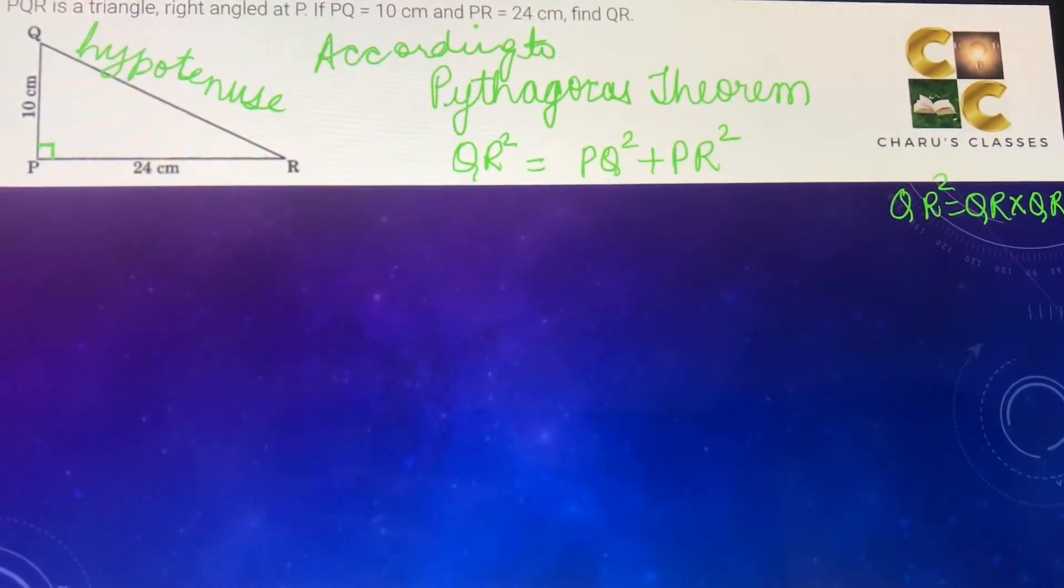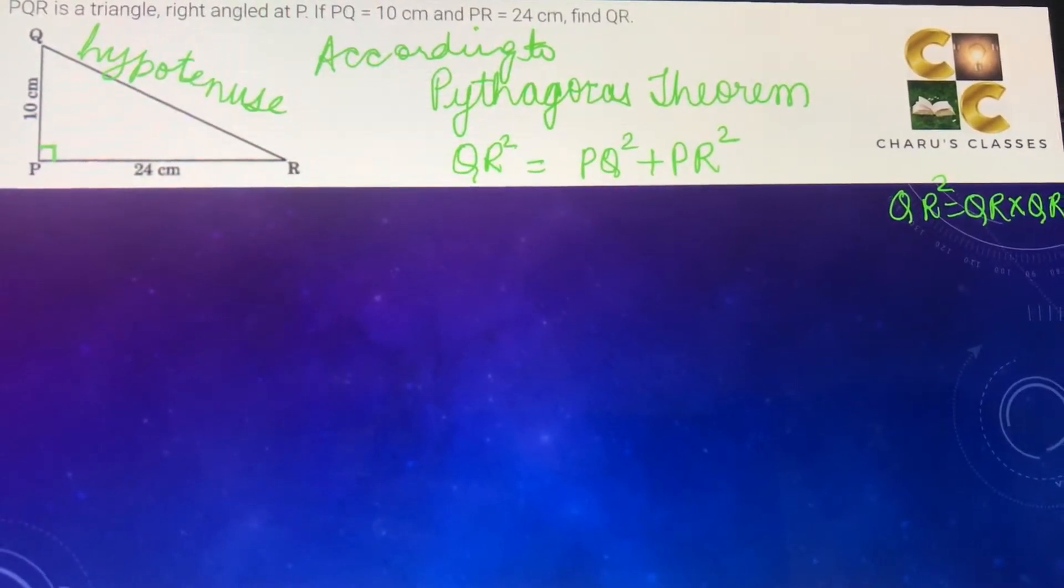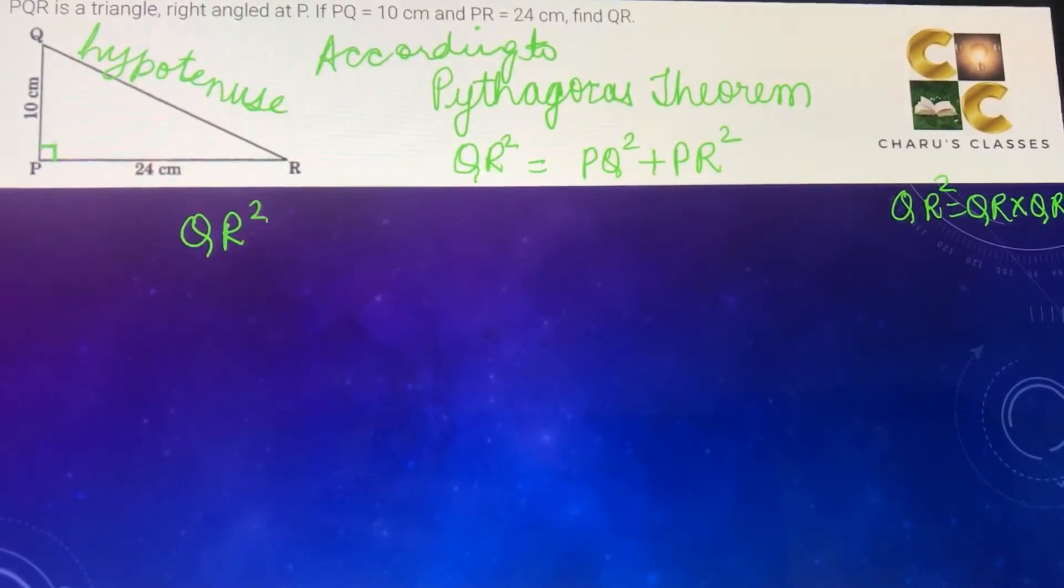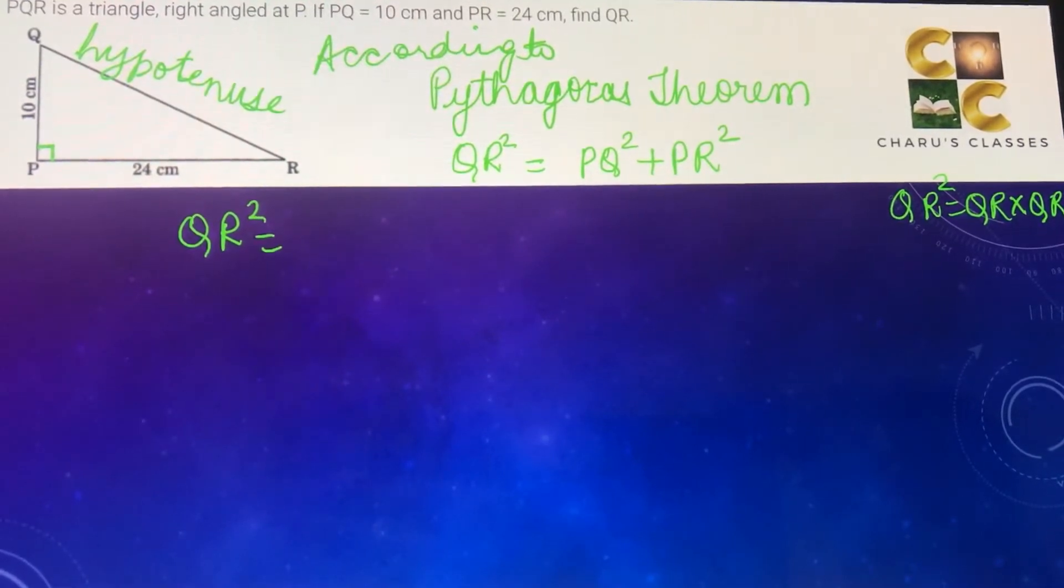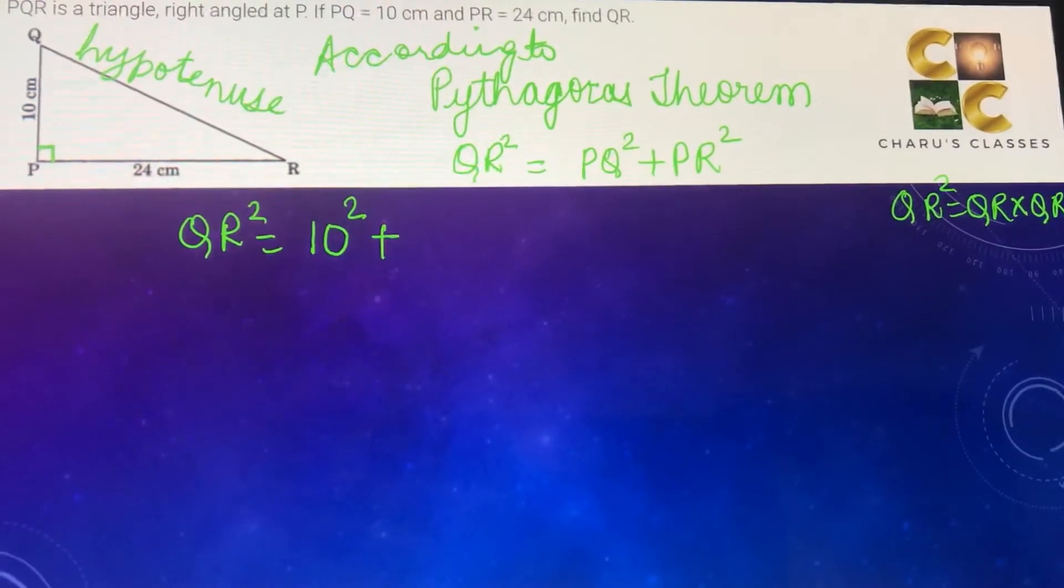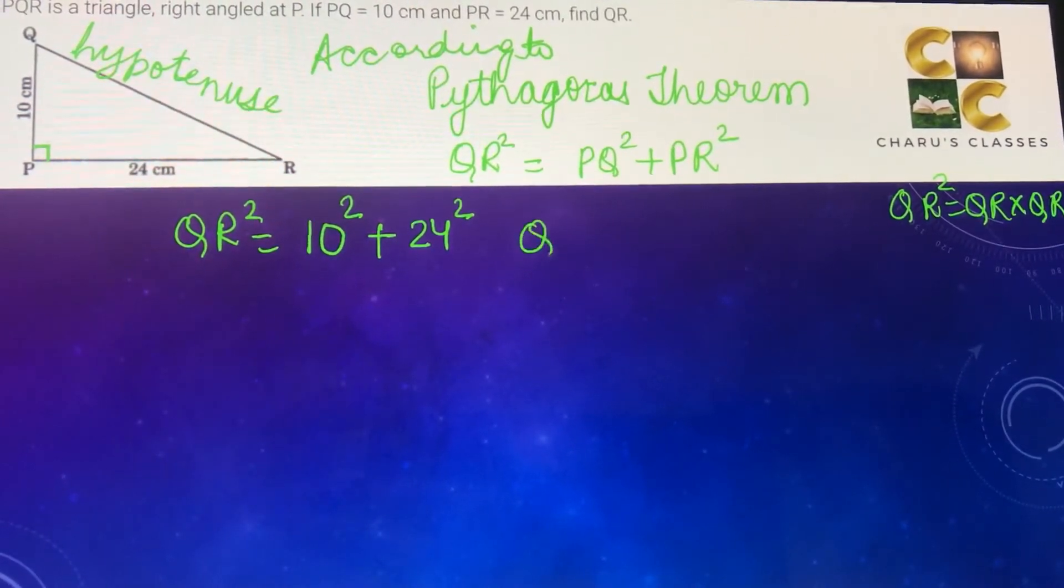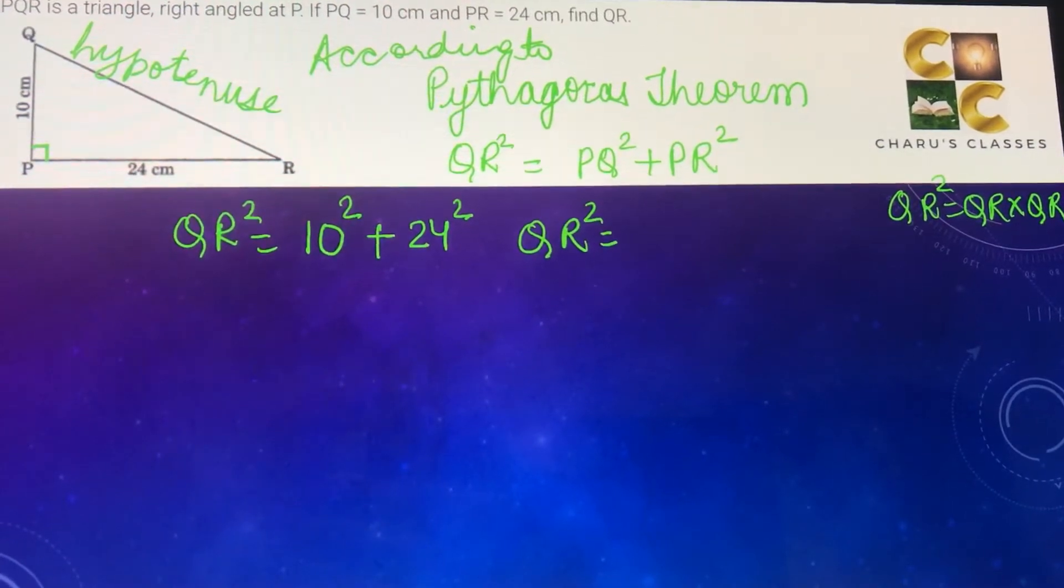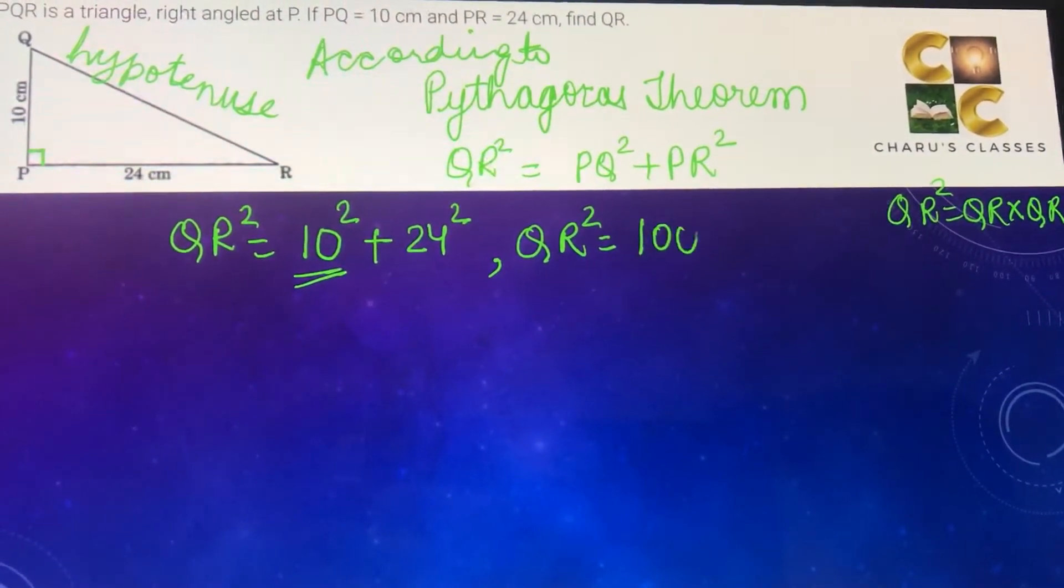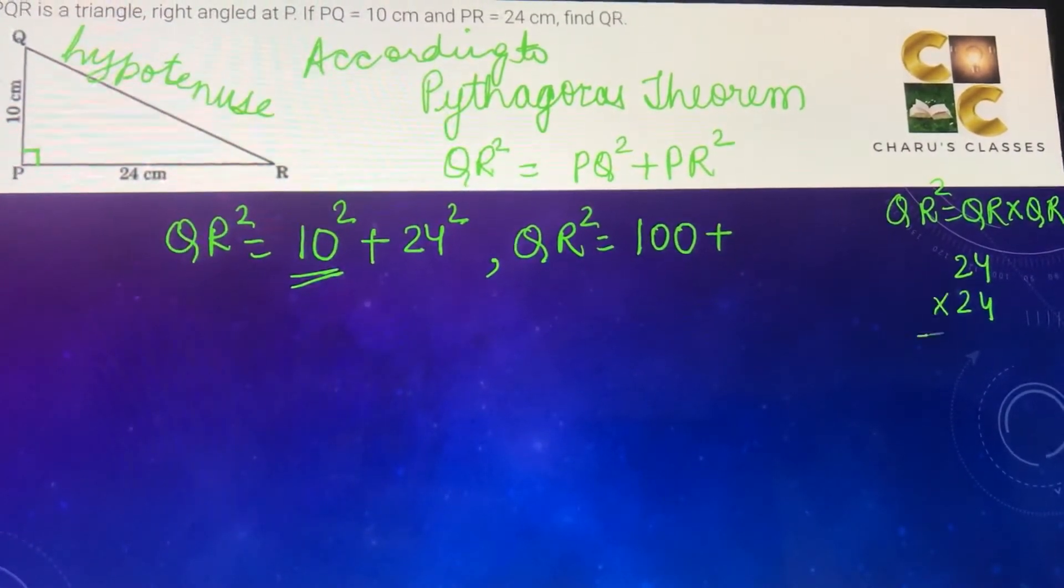Same way, PQ square means PQ into PQ and PR square means PR into PR. So using the Pythagoras theorem here, QR square is equal to PQ square is 10 square plus PR square is 24 square. So we can say QR square is equal to 10 square means 10 into 10 that is 100, plus 24 square means 24 into 24.